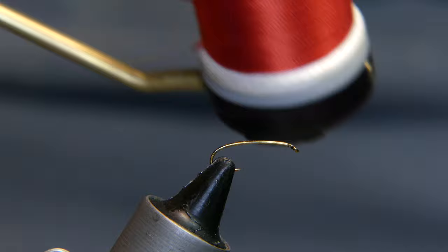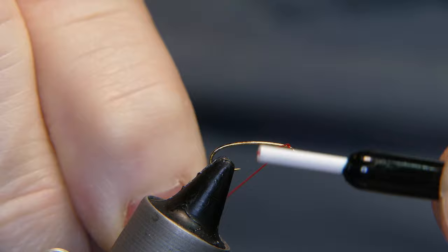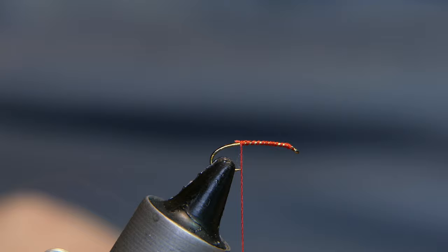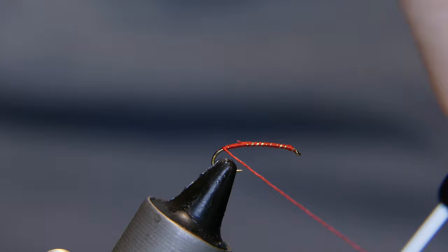I'm going to start the thread on right behind the eye of the hook. Wrap it backwards. Just cut away that tag end along the way. Take it back to a little beyond the bend of that hook.